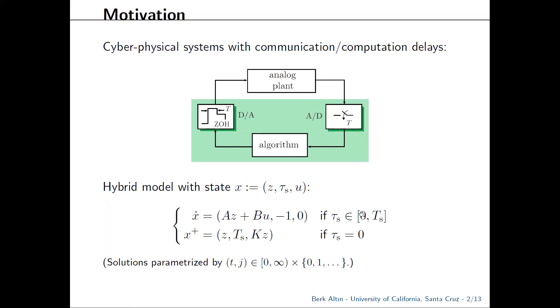Once the timer hits zero, it's going to get updated to Ts. The plant state z stays constant, and the input u gets updated to kz. We'll be studying the case where the control update taking u to kz will be delayed.